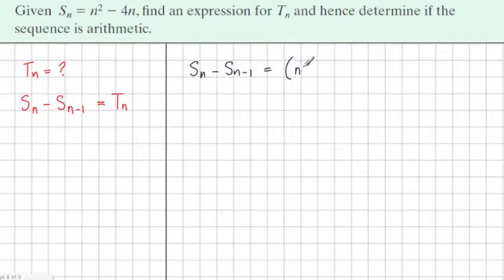Well, sum n is what's given in the formula, n squared minus 4n. And from this we're going to take away when we put in n minus 1 instead of n. So it's n minus 1 squared minus 4 times n minus 1. So let's just neaten this up.